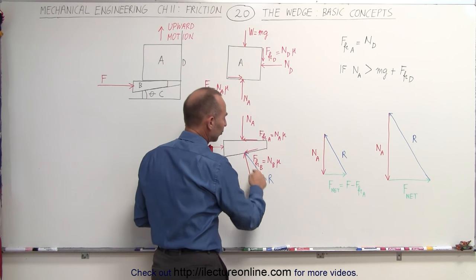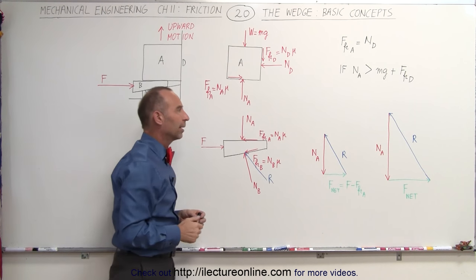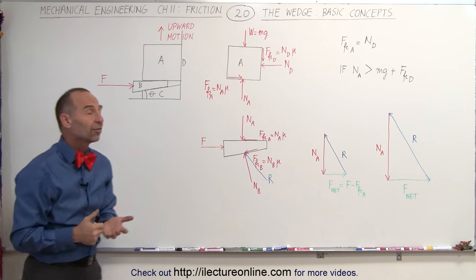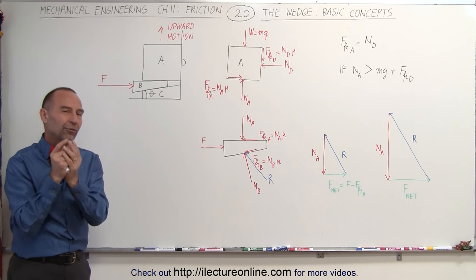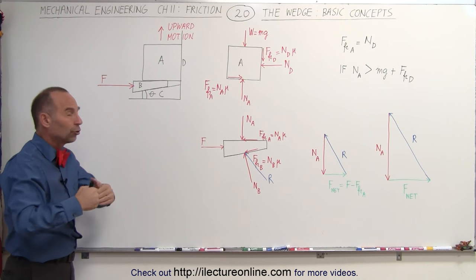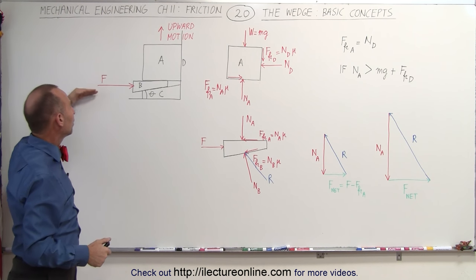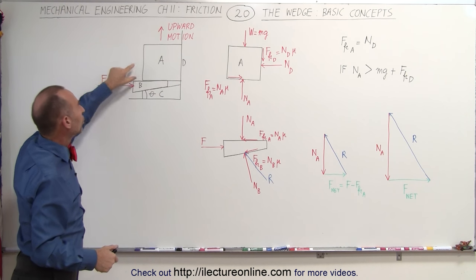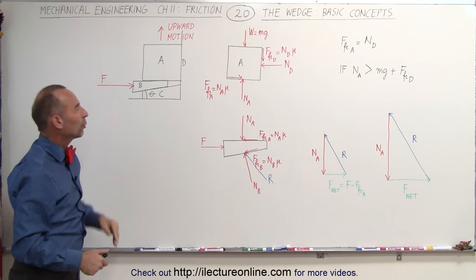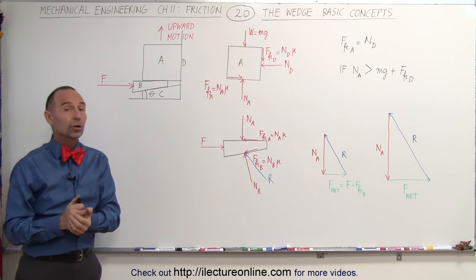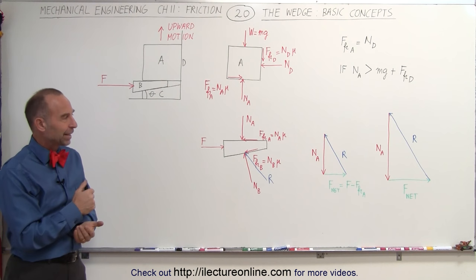Notice that the friction force on the bottom surface is already taken into account in the resultant force R right there. And those are the basic concepts of what we call the wedge. The wedge is used to use a fairly small amount of force to create a large force pushing some large object. In this case, a relatively small f will cause a large weight here to be lifted up just by driving the wedge in there. And that's how we're going to look at the concept of a wedge in some example problems coming up. That's how it's done.